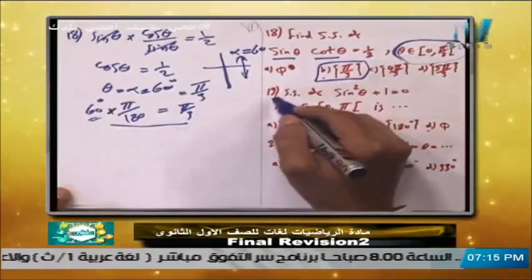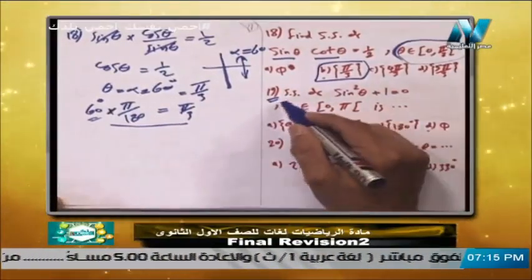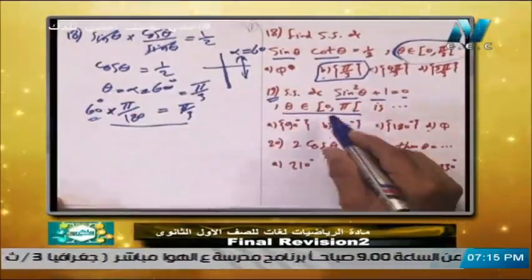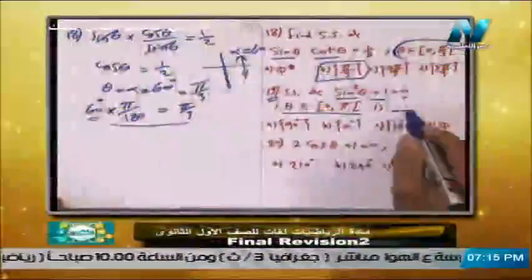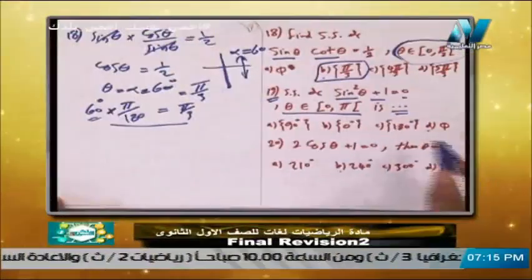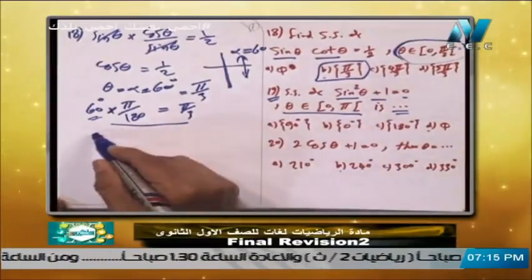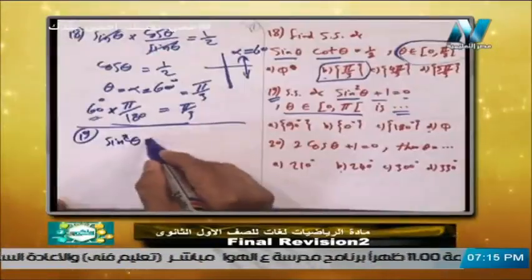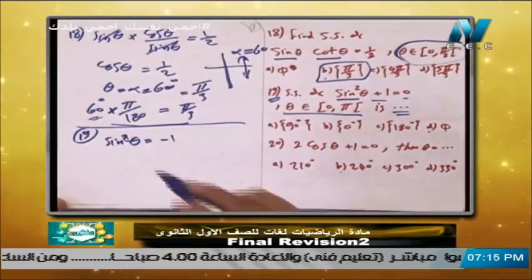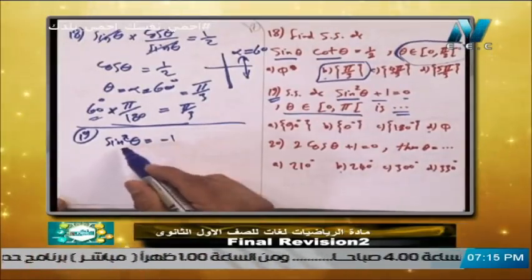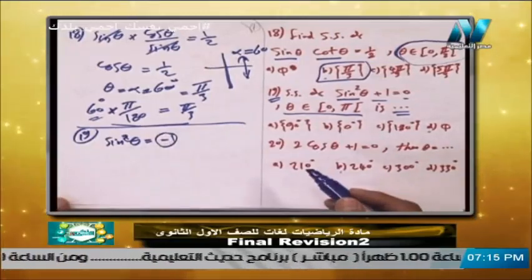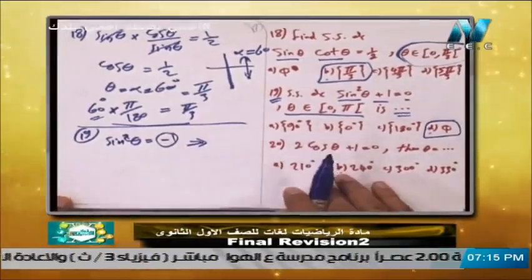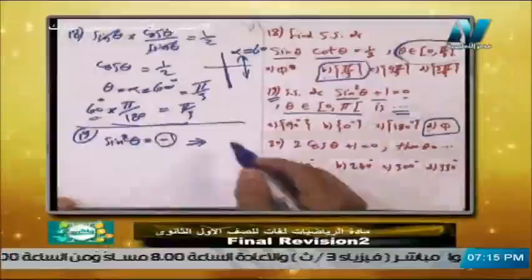Number 19: find the solution set of tan²theta + 1 equals 0, with theta from 0 before pi. This gives tan²theta equals -1. The intelligent student notices: how can a number squared equal a negative? It's impossible. So directly the answer is the empty set, phi. The answer is D: the empty set.